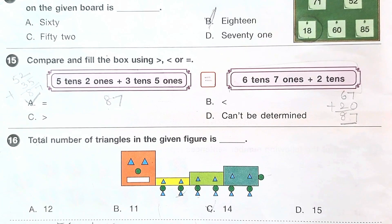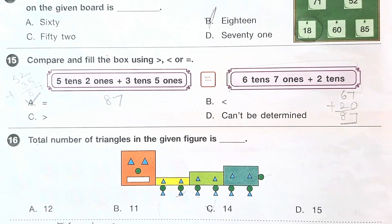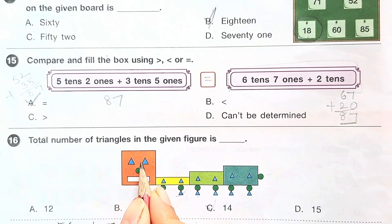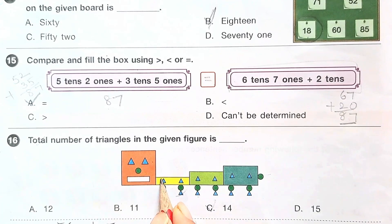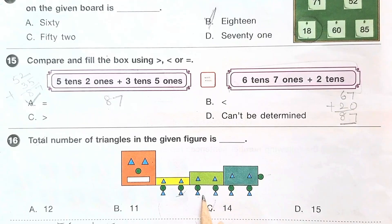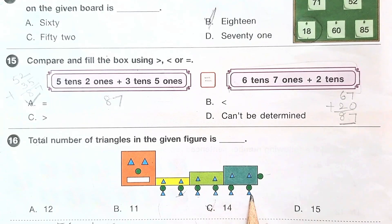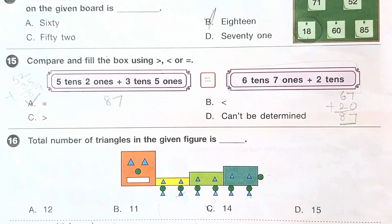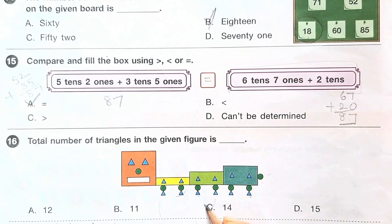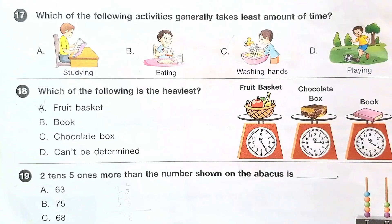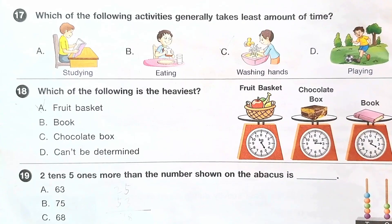Question number 16: let us count the number of triangles — 1 through 14. There are 14 triangles in total. The answer is option C.